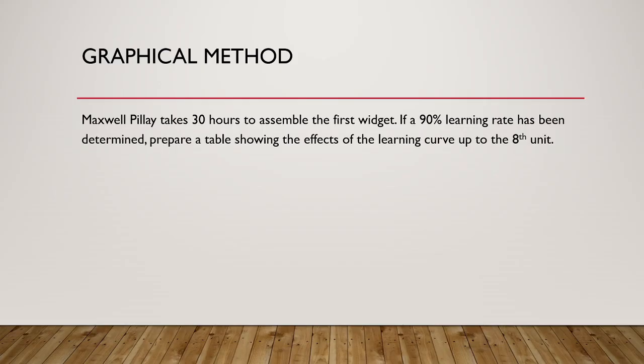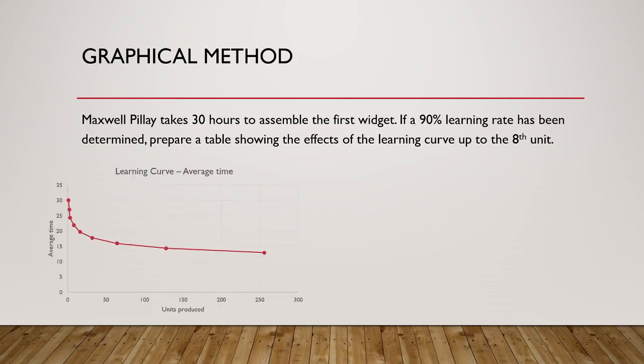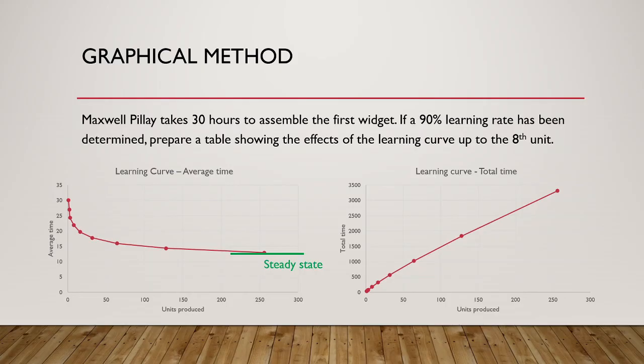Let us now consider the graphical approach for the same example. I will extend the graph for more units so the full curve is easier to visualize. When we look at the average time curve, we see that it decreases at a decreasing rate — declining rapidly at first and then slowing. Eventually the decline gets so small it can be ignored; when this regular efficiency is reached, we refer to it as a steady state level. When we look at the total time curve, we see that it increases rapidly at first, then the increase slows until it starts to increase at a near constant rate, like a normal variable cost curve. When interested in finding the average or total time to produce a certain number of units, we simply read it off the graph. While the graphical method is nice to visualize with, it is problematic as you will need to use either the cumulative doubling method or the mathematical model to accurately plot the graph.